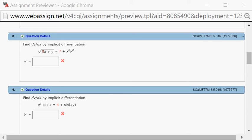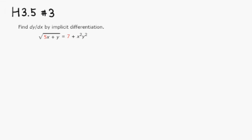Let's look at the homework 2.3.5 problem number 3 and find dy/dx. First thing I would do is rewrite this — I don't like square roots, so I'm going to write it as the quantity 5x plus y raised to the 1/2 power.